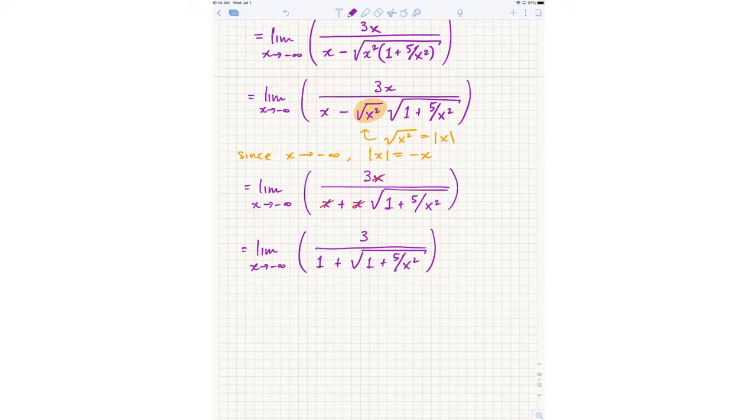So far all we've done is algebra, but motivated by the calculus, because we did use the fact that x is going to negative infinity. Now that we're done with the algebra, what should we do now? So now we can actually say x actually can go to negative infinity. This reciprocal here has limit zero as x goes to negative infinity. So now we can say once and for all that this limit is, we end up getting three over two as the limit here.